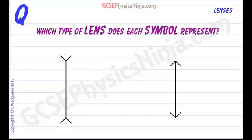You may see these symbols in ray diagrams and they represent different types of lenses.